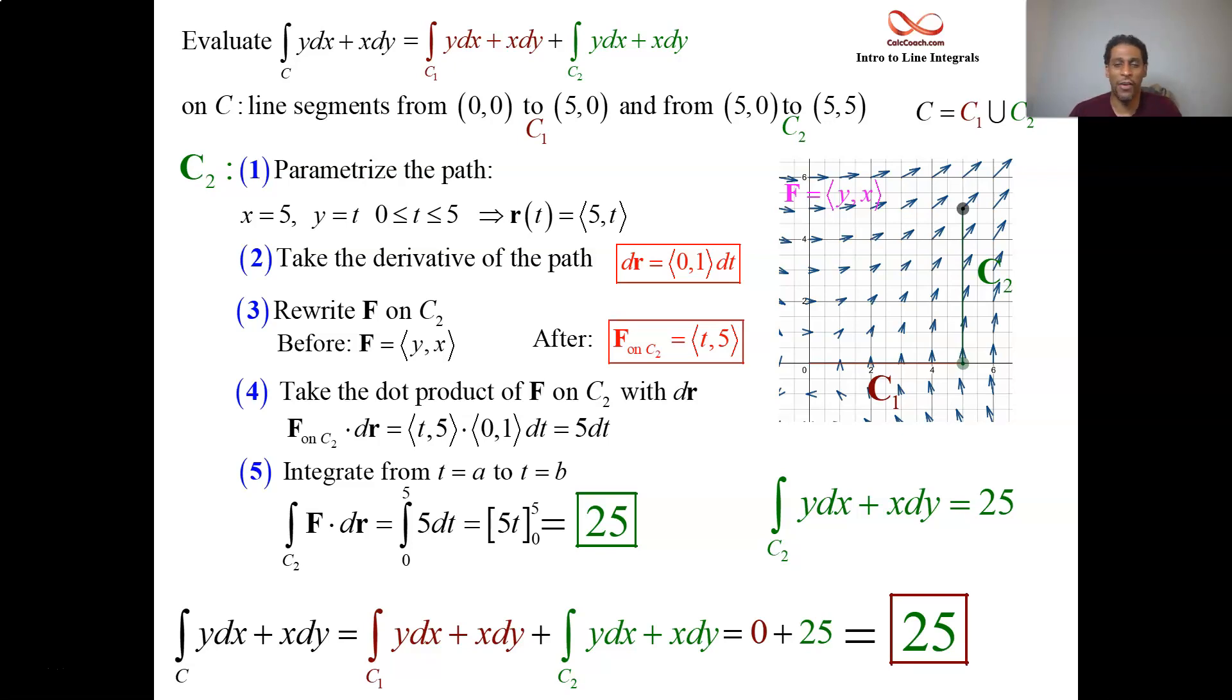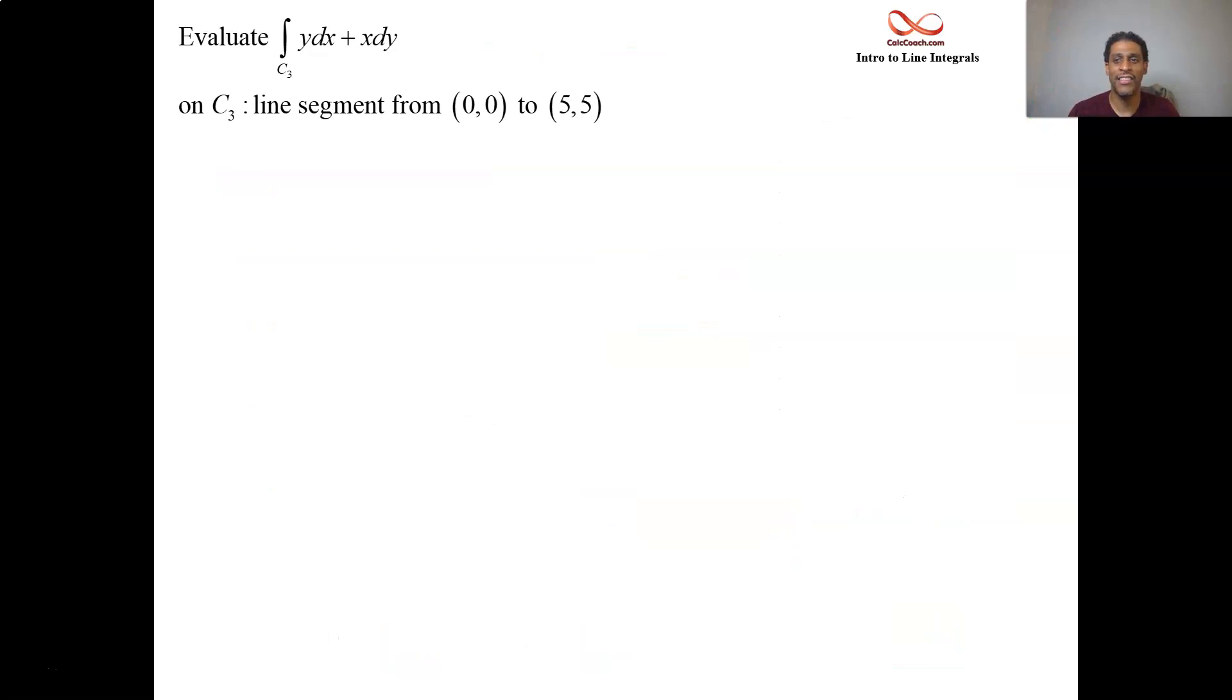Now let's look at the same vector field, same starting and ending points to our curve, but a different path. Let's look at straight line segment from the starting point of c1 to the ending point of c2. Let's call that c3. We're going to parameterize this path. It looks like you're going along the line y equals x. So if that's the case, then you know what to do. If you have y equals f of x, let x be t, and then y will be that formula on t. So it turns out that x is t and y is t.